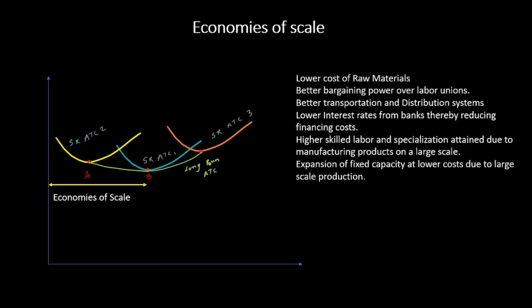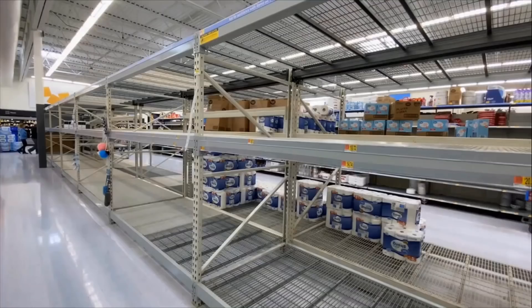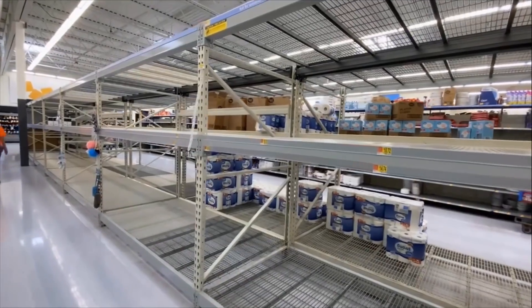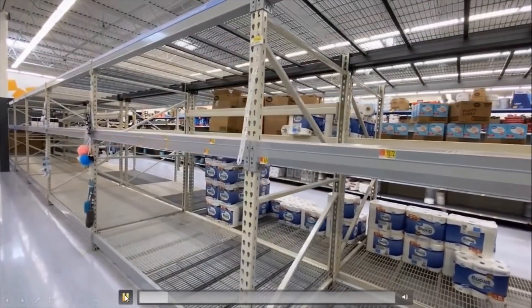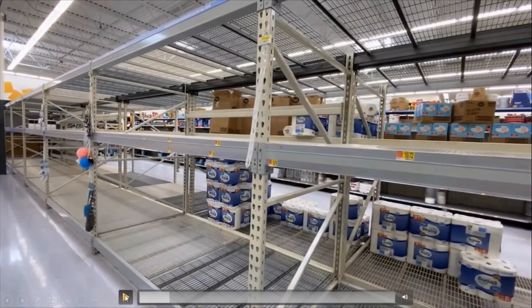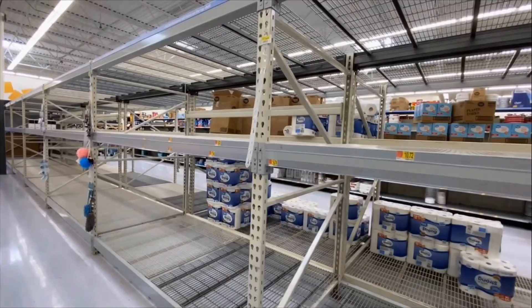Now let's see what happens when the firm further increases its production beyond point B toward point C. There are certain disadvantages when you further increase production levels after achieving economies of scale. Higher levels of production require higher quantities of raw materials, which may lead to shortage of adequate raw materials, requiring the firm to source materials from distant places and leading to a higher input cost.